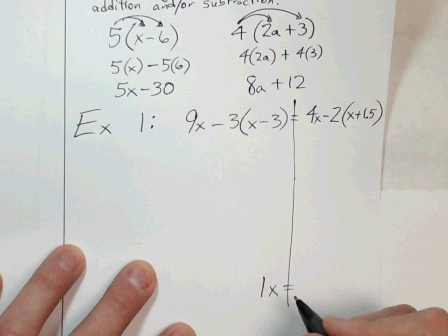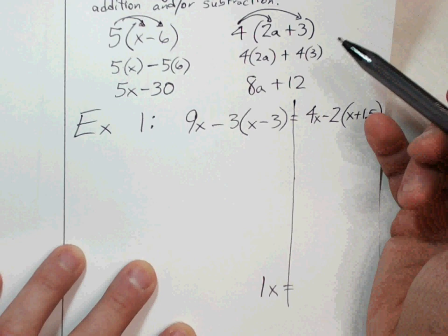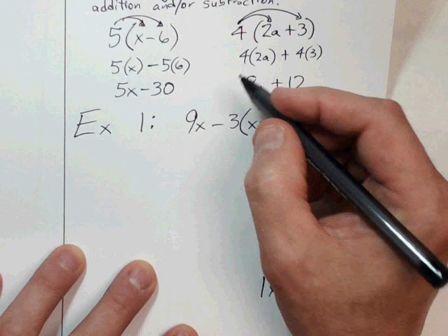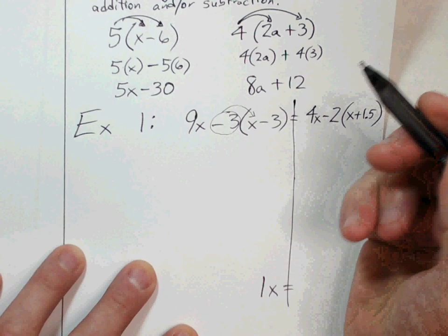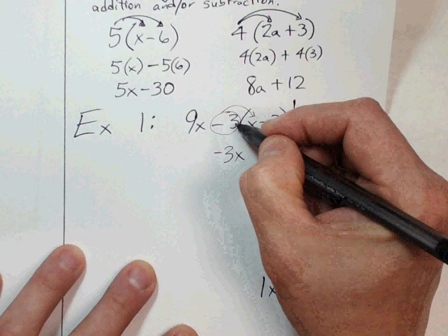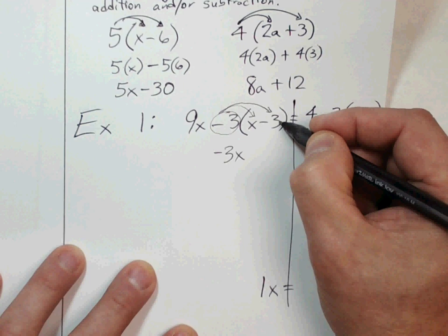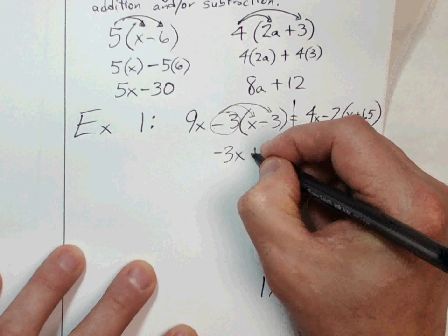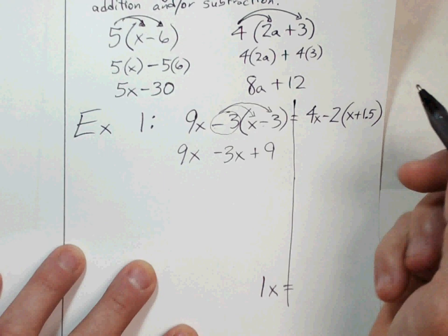First, I'll get rid of the parentheses by distributing. I look at the 3 and ask: what is its sign? It's negative, so I'm distributing a negative 3. Negative 3 times x is negative 3x. Then negative 3 times negative 3 — a negative times a negative is a positive — gives positive 9. So after distributing the left side, I have 9x minus 3x plus 9.